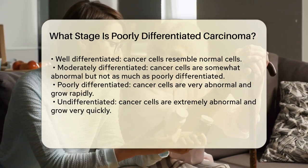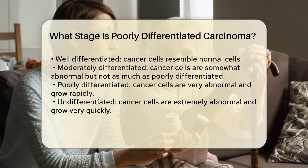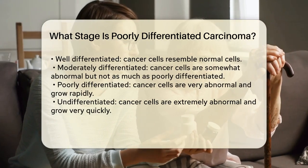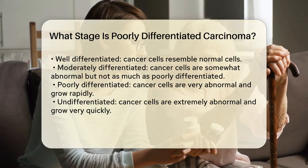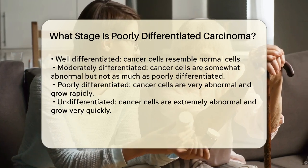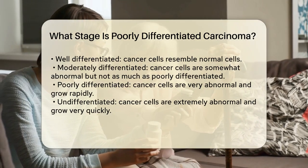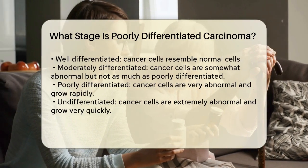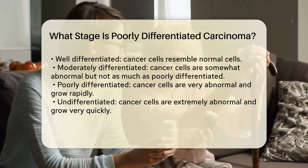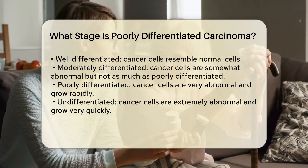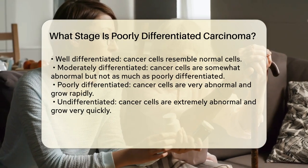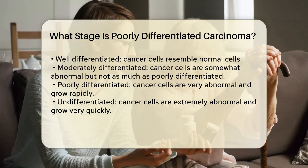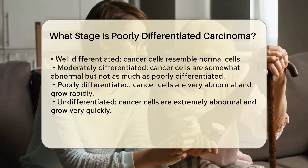Here's a breakdown of the differentiation levels. Well differentiated cancer cells look and act much like normal cells. Moderately differentiated cancer cells don't look and act exactly like normal cells but are not as abnormal as poorly differentiated cells. Poorly differentiated cancer cells don't look or act like normal cells and tend to grow quickly. Undifferentiated cancer cells don't look at all like normal cells and grow very quickly.